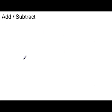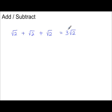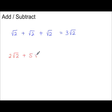Adding or subtracting surds. If we have root 2 plus root 2 plus root 2, there are 3 lots of root 2, which is the same as 3 times root 2. Make sure if you mean 3 times root 2, you haven't written the cube root of 2, which is different. Also, 2 root 2 plus 5 root 2 gives 7 lots of root 2.